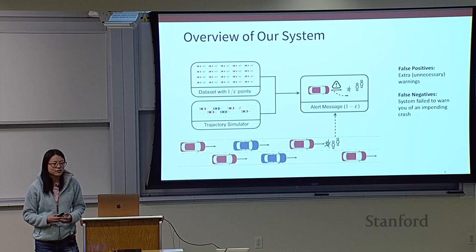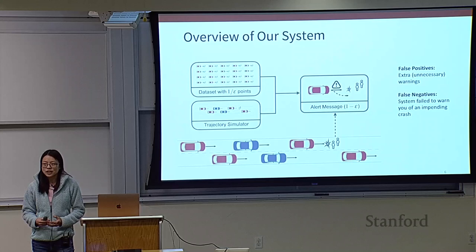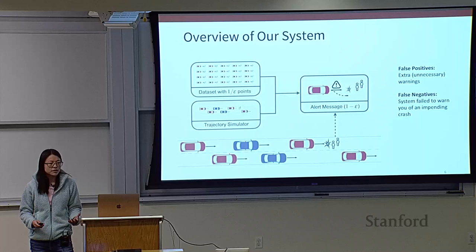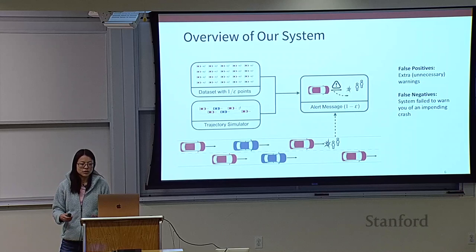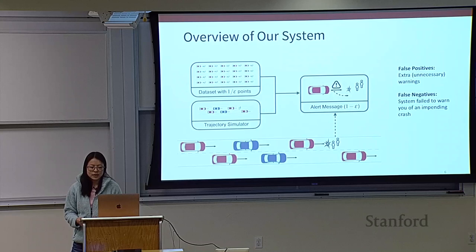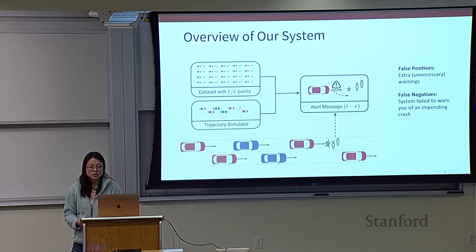Here's the high-level overview of how we approach the problem. We're going to use a running example of a driver alert system. In a car, we might want a warning system that alerts you every time you're in danger of crashing. This warning system could have errors — false positives or false negatives. In this scenario, false positives would mean extra warnings, and a false negative would mean the system failed to warn you when you were about to crash. The focus of this work is on providing a high-probability guarantee for how many false negatives are allowed, using the framework of conformal prediction.